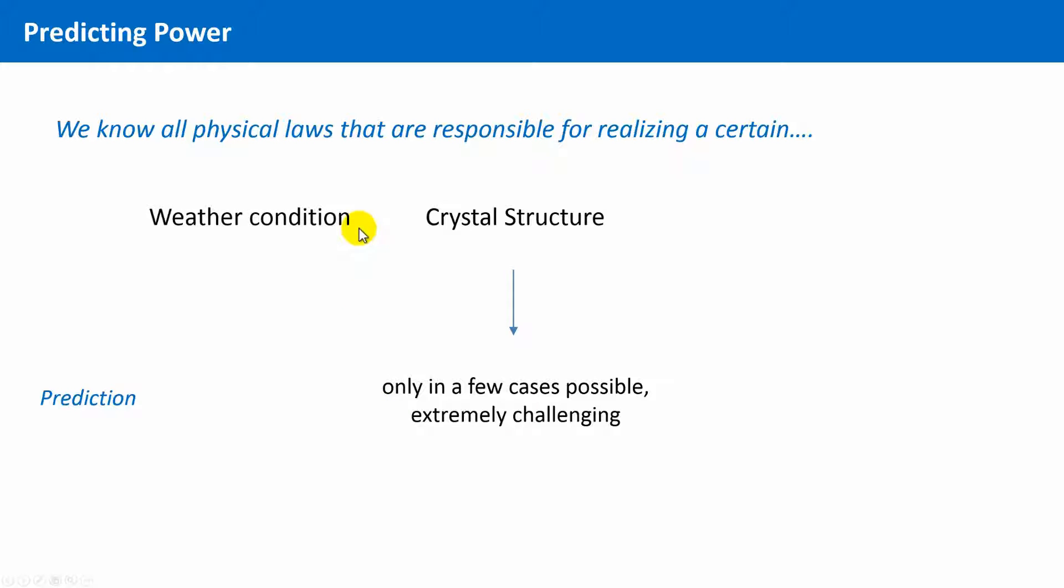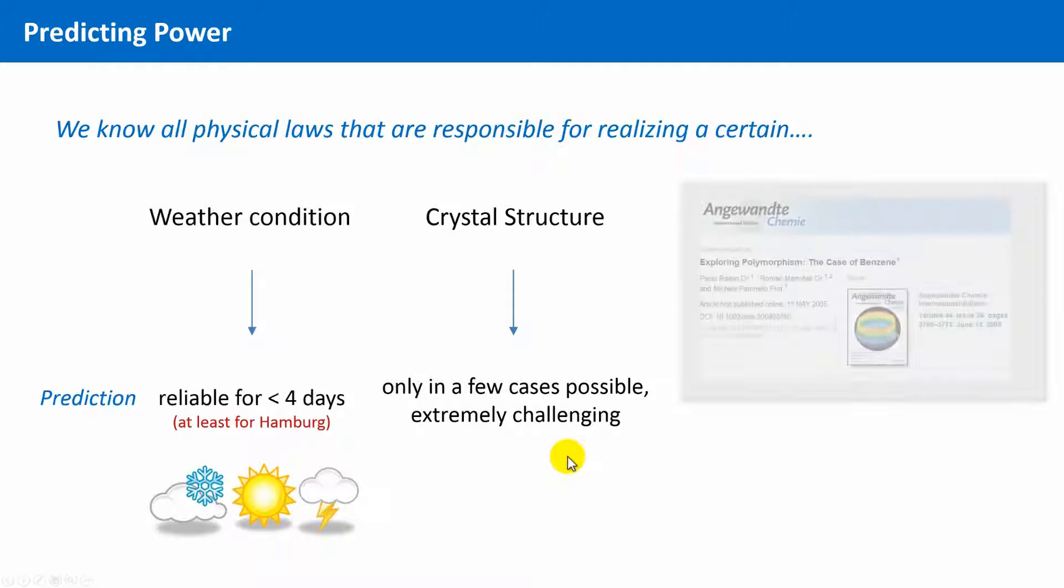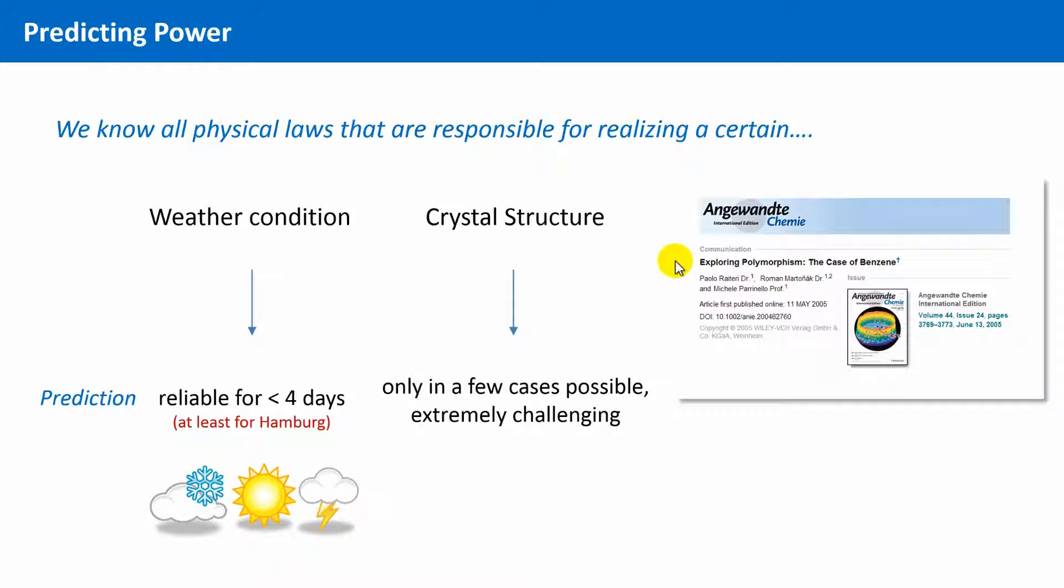The limitation of predictions, despite good knowledge of the underlying laws behind, is also true for other scientific disciplines, for instance, meteorology. You can find this very interesting article in which these difficulties of predicting crystal structures are outlined for the case of benzene in the reference section.